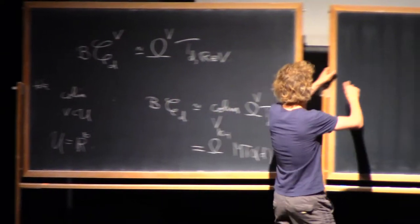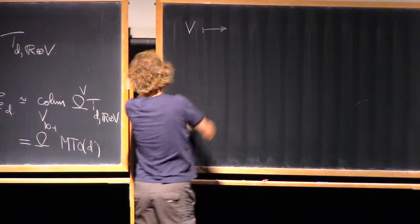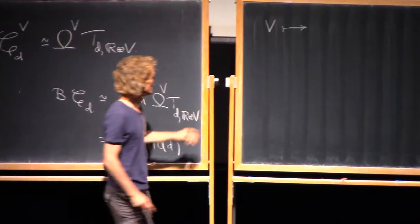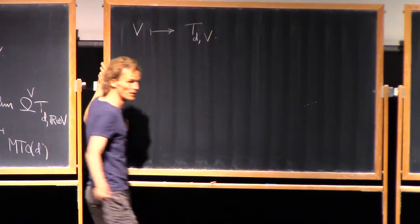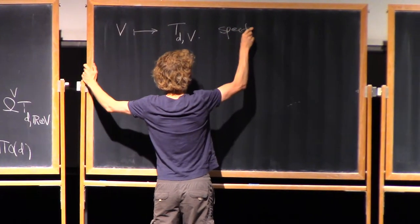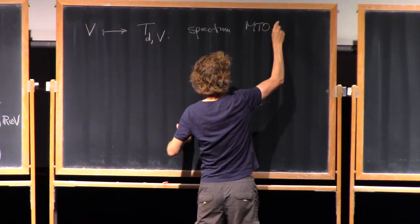Just a couple of words about the definition or the notation. This sequence of pointed spaces, td of v, forms what's called a spectrum. And that's what this notation mtod means.